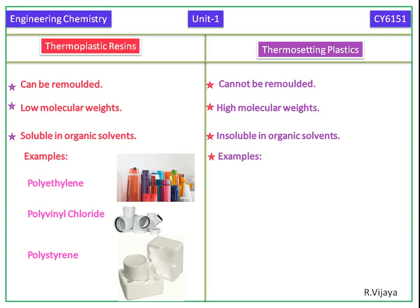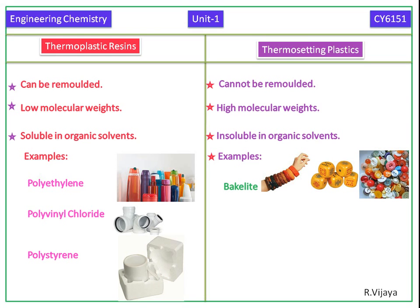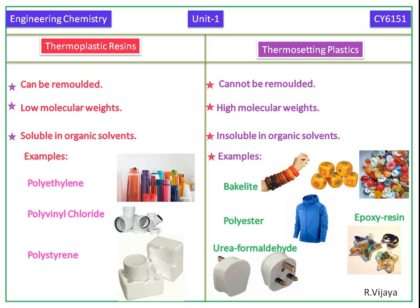Next we see the examples of thermosetting plastics: bakelite, polyester, urea formaldehyde and epoxy resin.